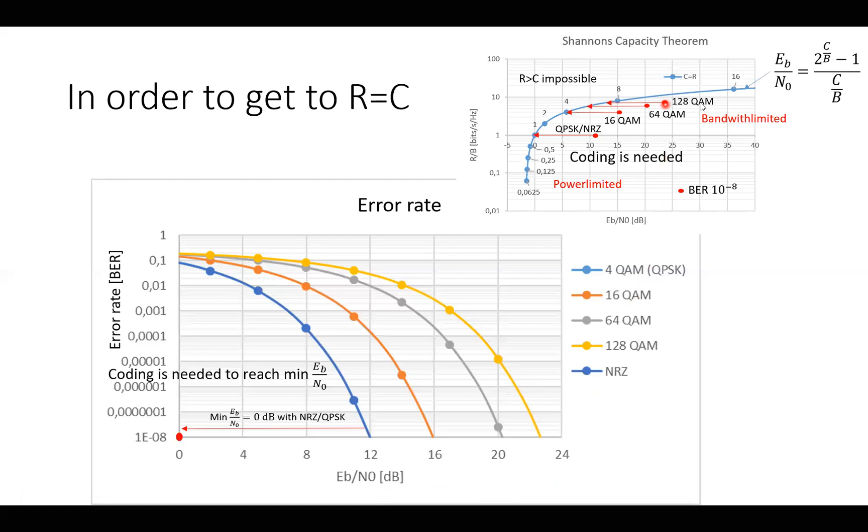But it's not optimal. You see that in order to get to the optimal where C is equal to R, you have a way to go. And the only way to go along this way is to have some kind of coding. Because if you have some kind of coding, this one here would bend much more like this, so that you will come closer to this one.